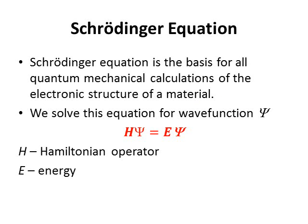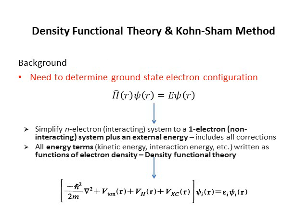What is the Schrodinger equation? The Schrodinger equation is the basis for all quantum mechanical simulations of the electronic structure of materials. H represents the Hamiltonian operator, E represents the energy of the material, and this is the wave function. We want to solve this Schrodinger equation for wave functions. Unfortunately, it is not easy to solve for a material with many electrons, which is why we need to make simplifying assumptions.